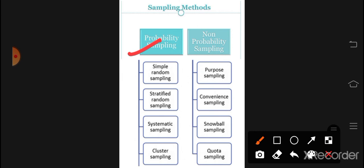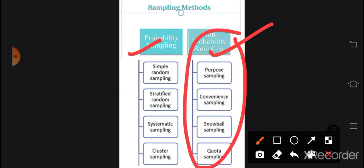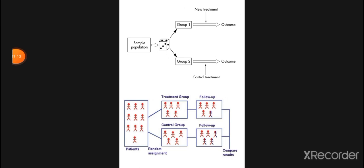Non-probability sampling is more economical and not time-consuming. It is more convenient and easier to do. However, its disadvantage is that results cannot be generalized and it is less authentic — there may be sampling errors. Three types of errors include observer variations (intra and inter-observer), subject variations (biological and natural variations), and faulty instruments or technological errors.